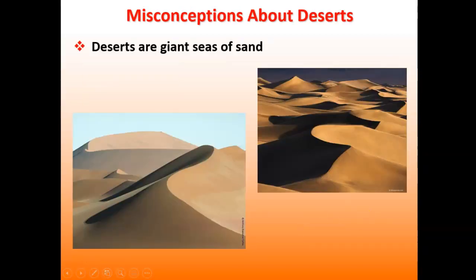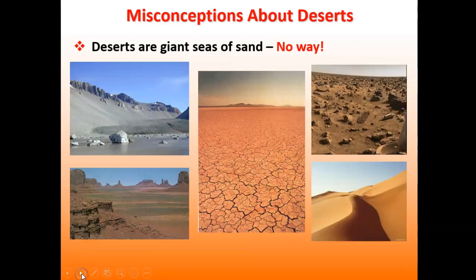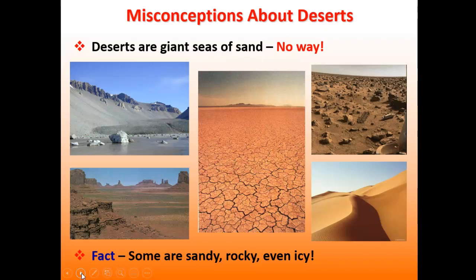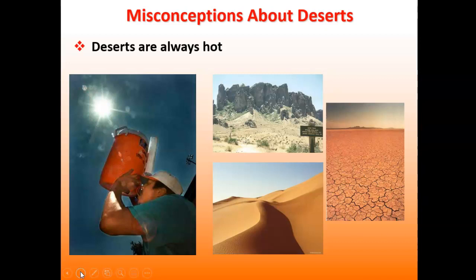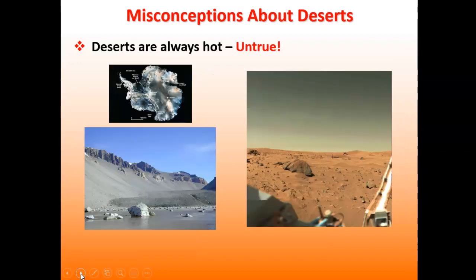A common misconception is that deserts only look one way — all sand. That's not true, because using our definition of less than 10 inches of rainfall a year, we can have places with no sand, places that are cold, or places that are rocky. Here in Arizona, we don't have sand dunes everywhere, but many areas still get less than 10 inches of rainfall per year.